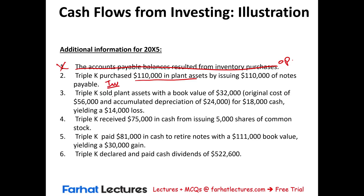Item 2 is an investing activity. Item 3, where Triple K sold a plant asset, is also an investing activity. Triple K received $75,000 in cash from issuing new shares — that's financing. Triple K paid $81,000 in cash to retire a note — also financing. Triple K declared and paid a cash dividend — that's a financing activity. Simply put, we have to deal with items 2 and 3 in the investing section.